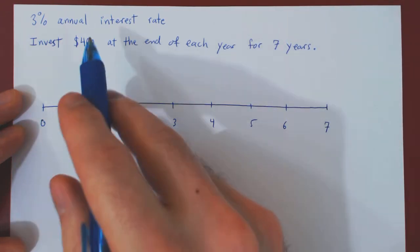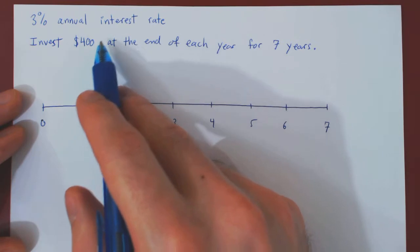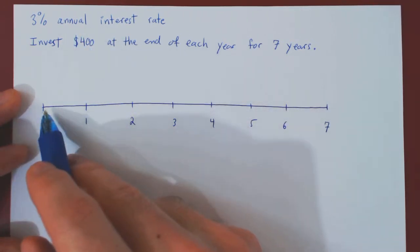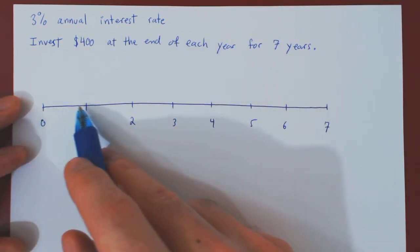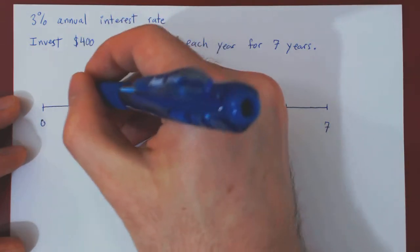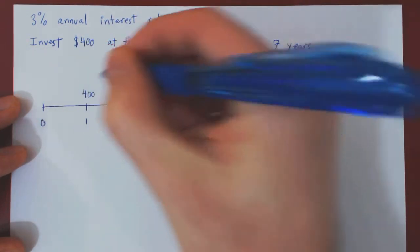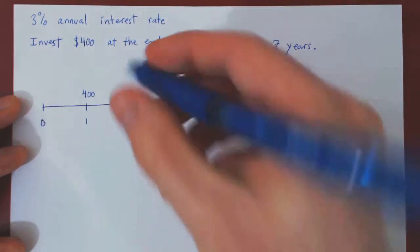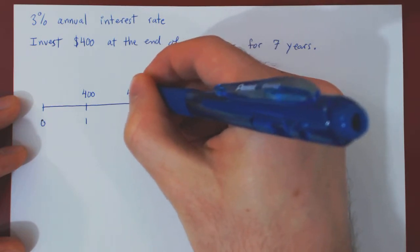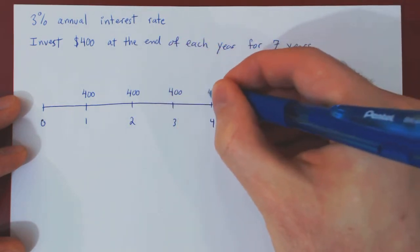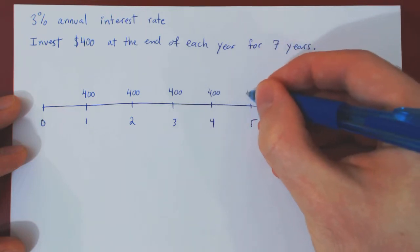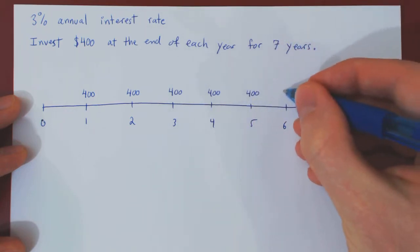And we're saying at the end of each year, we invest $400. So this is the beginning of the first year, and now we've reached its end, so we invest $400. At the end of year 2, we invest the same amount, and the same goes each year for seven consecutive years.